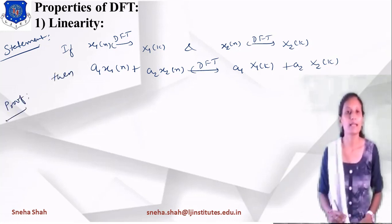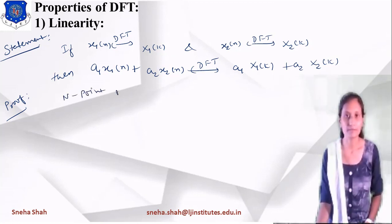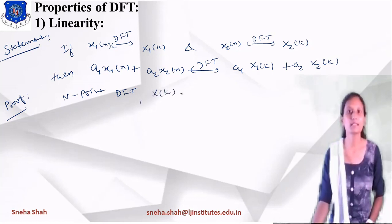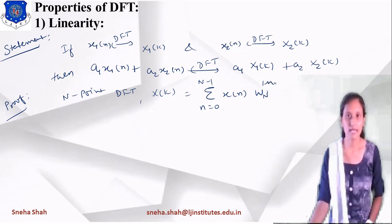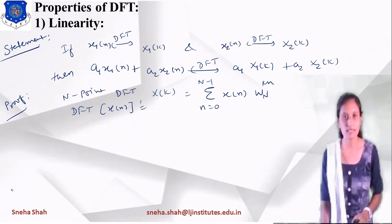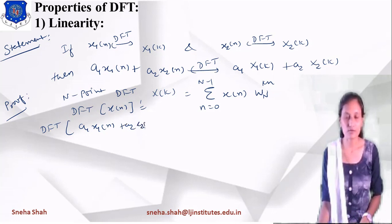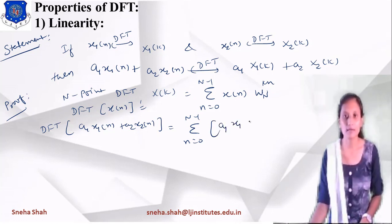To prove this property, we start with the N-point DFT equation: X(k) = summation from n=0 to N-1 of x(n) · W_N^(kn), written in twiddle factor form. We have to find DFT of a1·x1(n) + a2·x2(n). So starting with DFT of [a1·x1(n) + a2·x2(n)], the value equals summation from n=0 to N-1 of [a1·x1(n) + a2·x2(n)] · W_N^(kn).